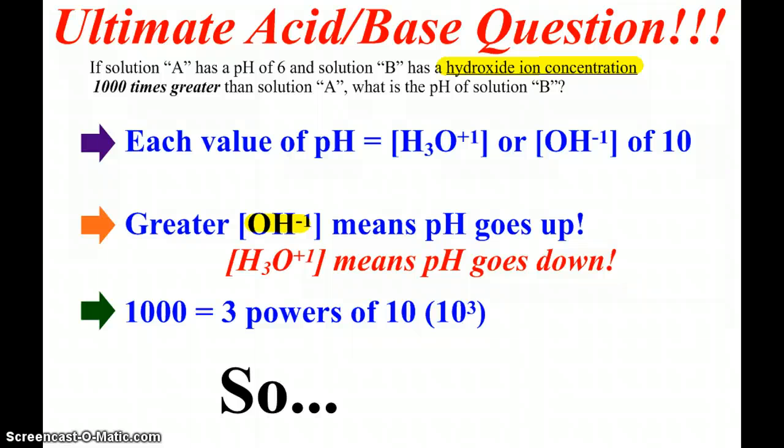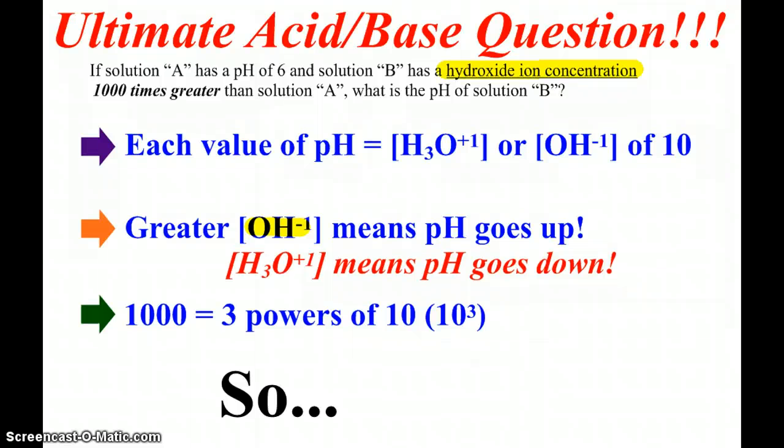The master chemist question. Well, here we have two solutions, A and B. Solution A has a pH of 6, and then solution B has some different qualities, and from those qualities, we can figure out what the pH is.